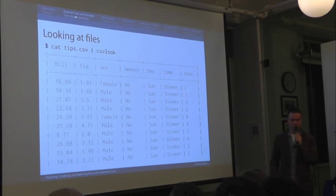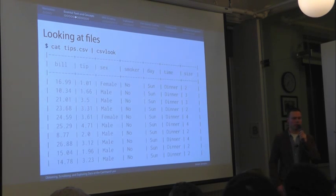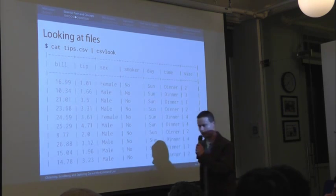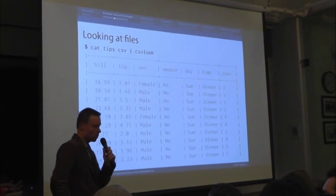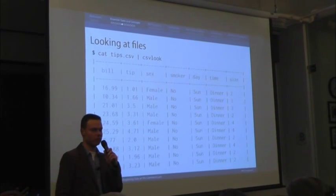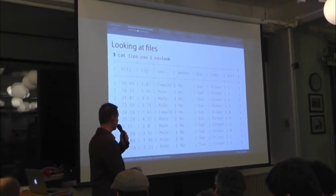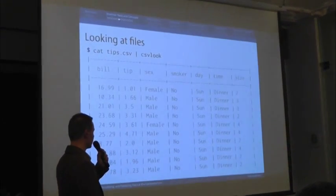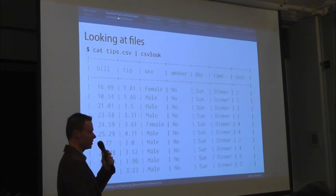Csvkit is available via 'pip install csvkit'. I'll give a list of references at the end. If you go to my website, there's a blog post called 'Seven Command Line Tools for Data Science' — csvkit is one of those. Csvlook nicely formats our dataset. So let's do something with this dataset, because we're data scientists and we need to get our hands dirty.